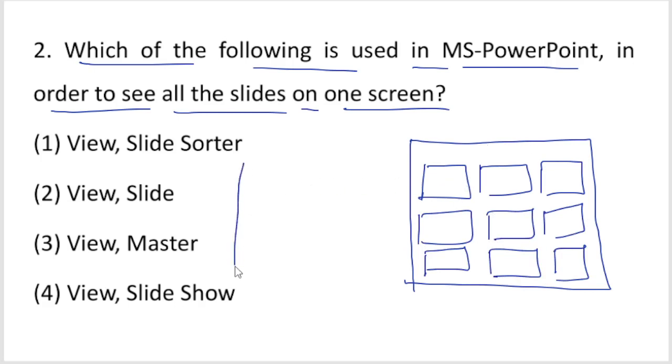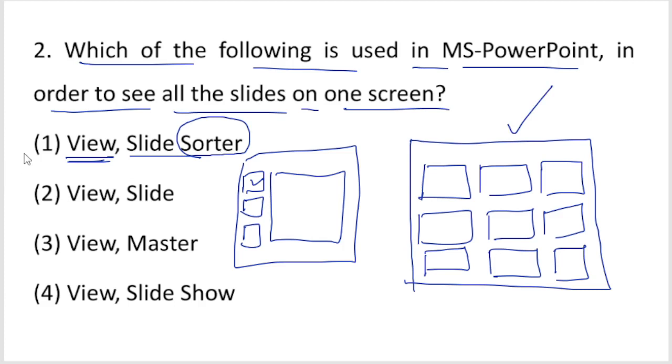In Microsoft PowerPoint, to see all slides on one screen, you need to access the view. If you click on the slide sorter view, you can see all slides as thumbnails on one screen.